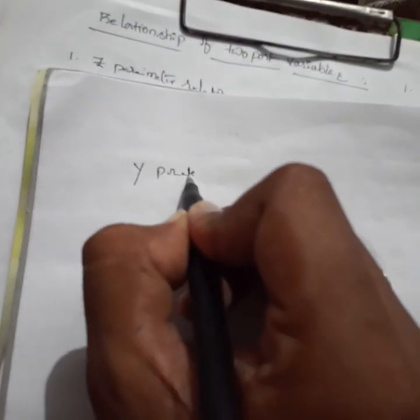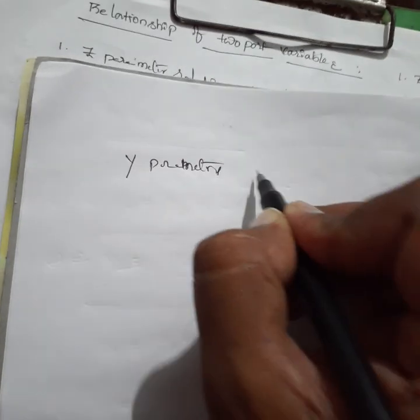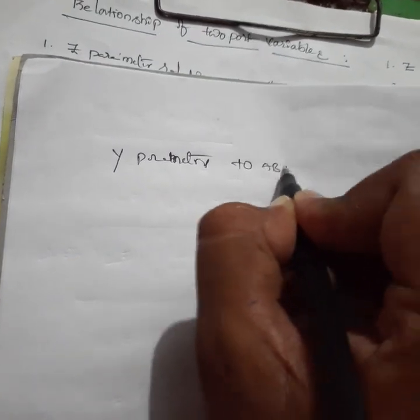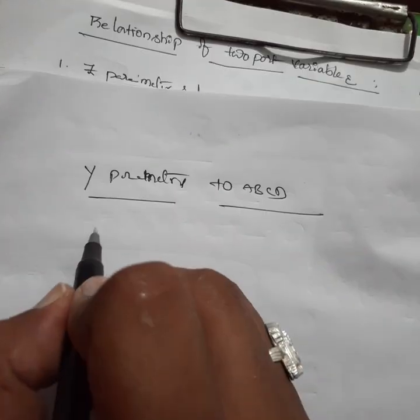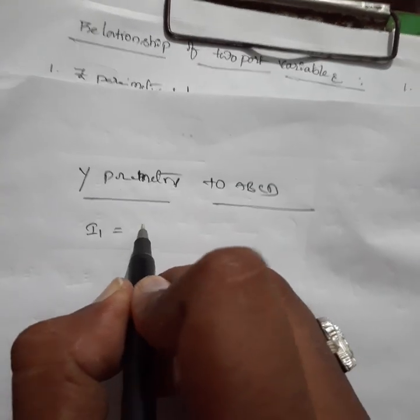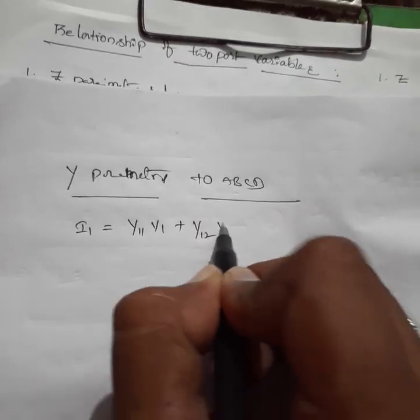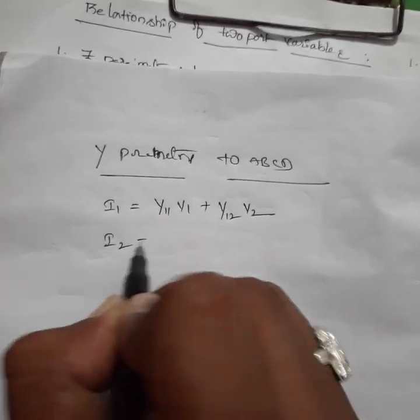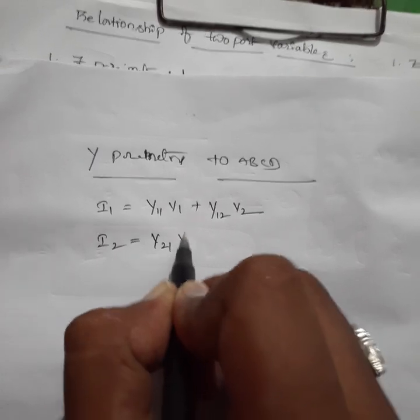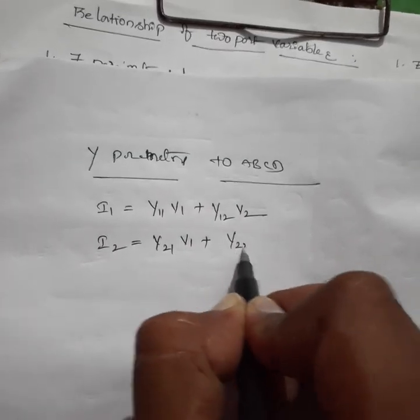This is the continuation of the above video — the analysis of Y parameters to ABCD parameters. Y parameters: i1 equals y11·v1 plus y12·v2, and i2 equals y21·v1 plus y22·v2.